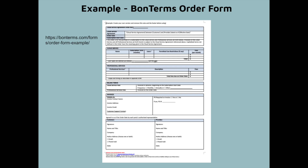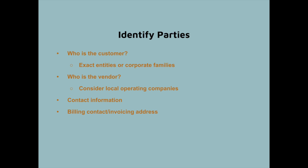The first thing you want to do in an order form is identify the parties — who the customer is and who the vendor or provider is. You'll want a customer and provider contact, and you need to know the exact entity name for each. On the customer side, it can make a big difference whether you're allowing one entity to use your service or all entities within their corporate structure, particularly if you're pricing it on an all-you-can-eat basis. You should ensure the pricing and scope of the corporate umbrella you're dealing with match up.